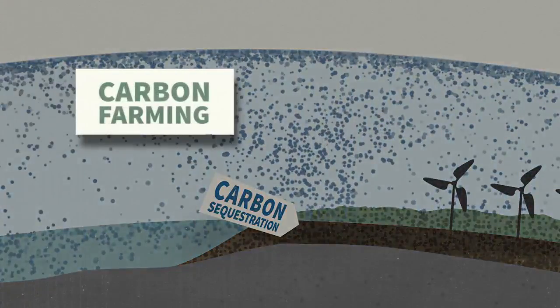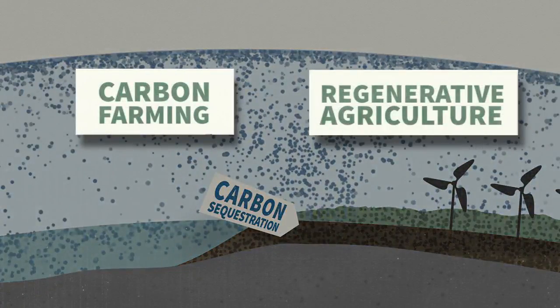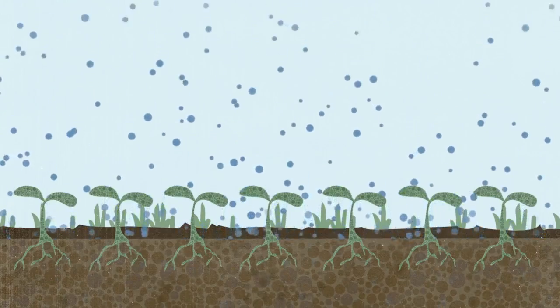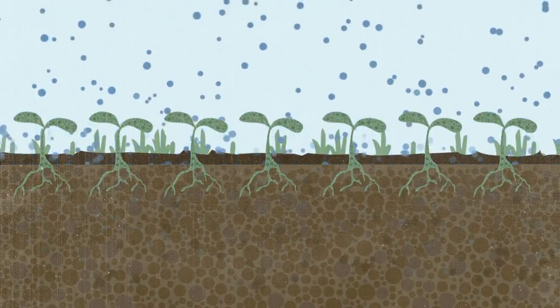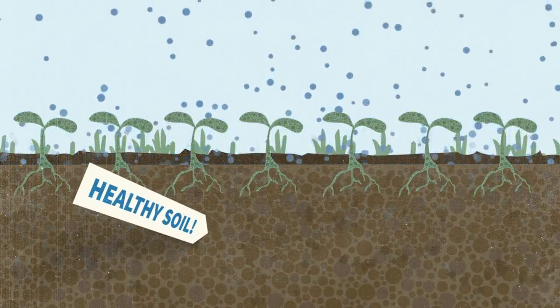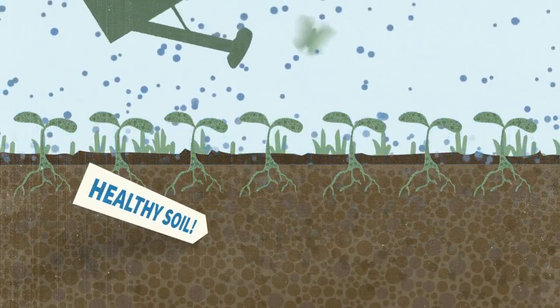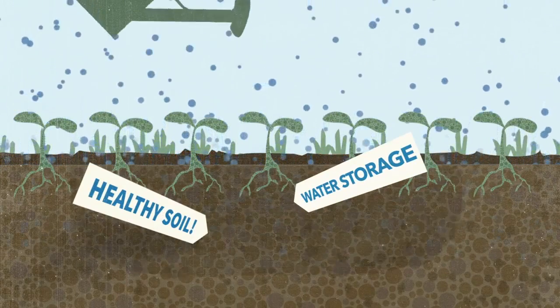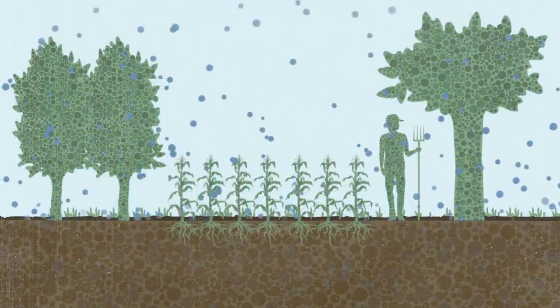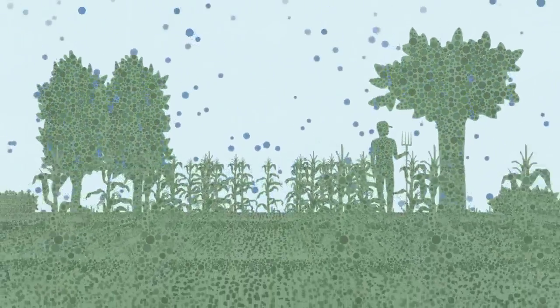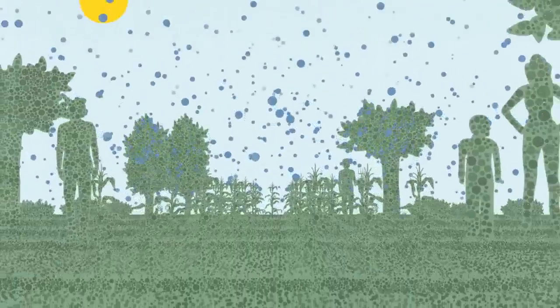This is carbon farming. This is regenerative agriculture. Unlike more carbon in the atmosphere, more carbon in the ground is good for us. It makes healthy soil, which is nutrient rich and full of life and holds way more water. This means more nutritious food and crops that are more resilient in the face of drought. That's good news for farmers, families, and everyone who eats.